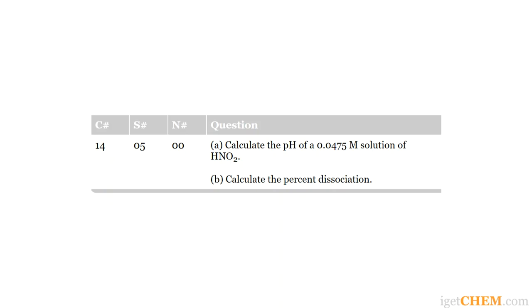Let's take a look at the question. Calculate the pH of a 0.0475 molar solution of HNO₂, and calculate the percent dissociation.